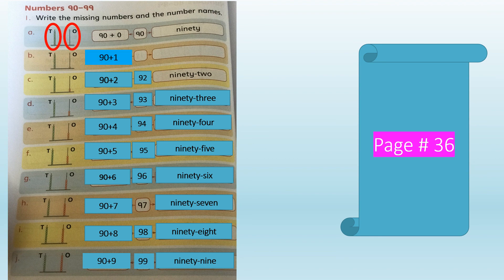90 plus 1 makes 91. The number name is N-I-N-E-T-Y, hyphen, O-N-E — ninety-one, 91. In part C, what comes after 91? Yes, it's 92. It has two ones which make 92. The number name is N-I-N-E-T-Y, hyphen, T-W-O — ninety-two, 92.